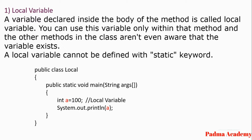Other methods inside the class are not even aware that the variable exists. A local variable cannot be defined with the static keyword. Let us see the example of the local variable. This is a class called 'Local'. Inside that class we have our main method — public static void main. Inside that main method we have declared one local variable called 'a'.